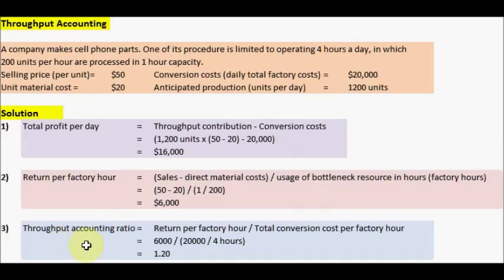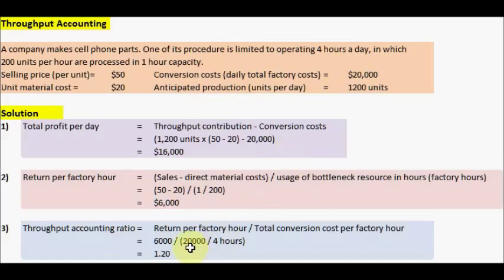Next, we calculate the throughput accounting ratio, which is return per factory hour divided by the total conversion cost per factory hour. The return per factory hour is $6,000. The total conversion cost is $20,000 divided by 4 hours, because the factory operates 4 hours a day, giving $5,000 per factory hour. Overall, you get a total throughput accounting ratio of 1.20.